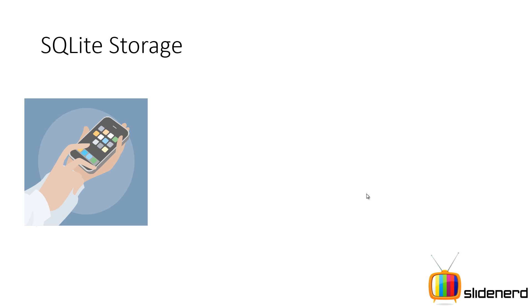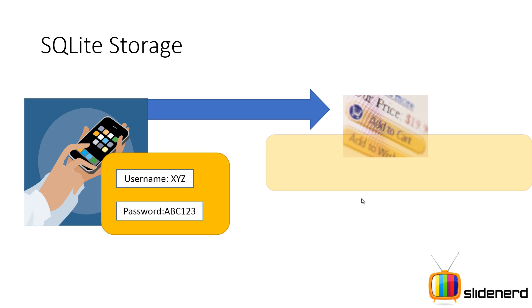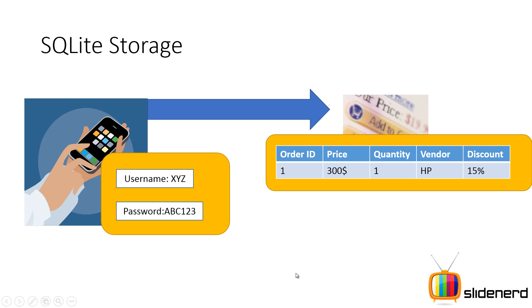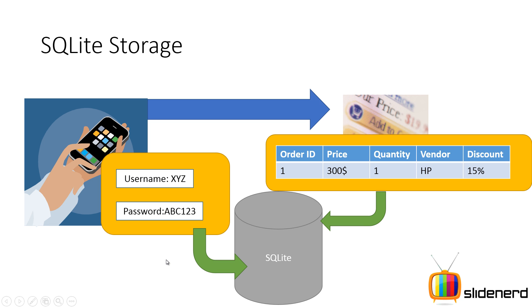Let's talk about the second method, which is SQLite storage. Same scenario, but this time you have the username XYZ, the password, and then an order ID, a price, a quantity, a vendor, a discount, and many other pieces of related data. You want to store all this inside your app. Previously you were only storing the username and password in the shared preferences case, but here you're storing other details — a set of related tables. In this scenario, it's best to put the data inside an SQLite database, which stores data as tables, like you've seen in SQL or Microsoft Access.